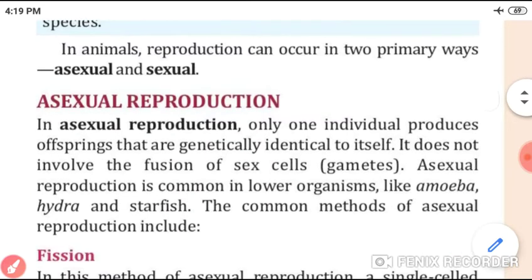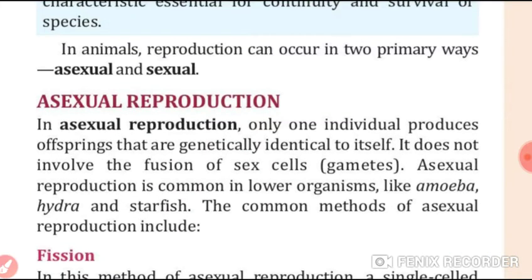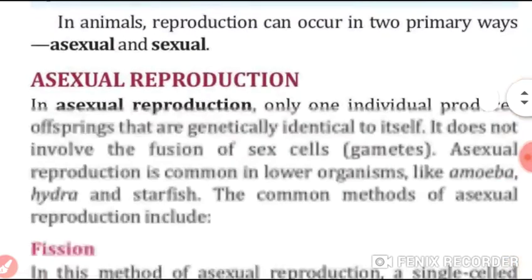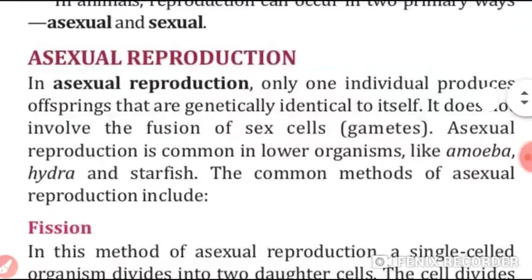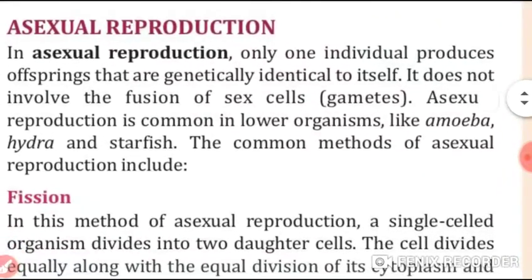Reproduction in animals occurs in two ways: asexual and sexual reproduction. In asexual reproduction, only one individual — one parent — is needed. It does not involve the fusion of sex cells, that means gametes, and it occurs in lower organisms like amoeba, hydra, and starfish.